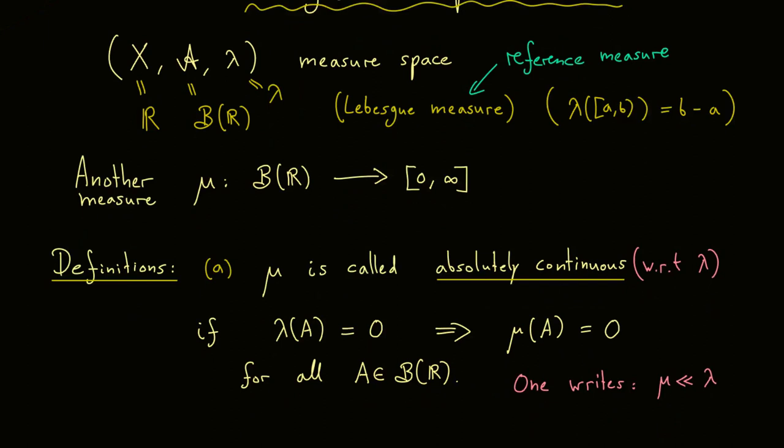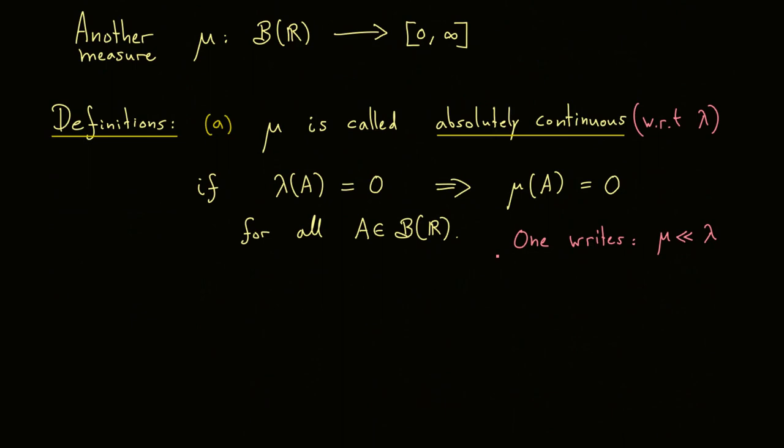Now you can immediately think of some examples here. You could just choose mu as lambda itself. Then this implication is obviously fulfilled. So you can say lambda is absolutely continuous with respect to lambda. So no surprise here. The Lebesgue measure is absolutely continuous. Another easy example would be just the zero measure. Then this is also fulfilled so the zero measure is also absolutely continuous.